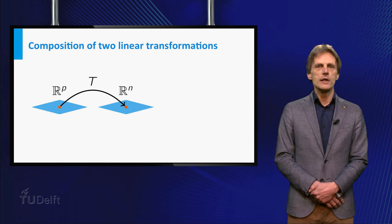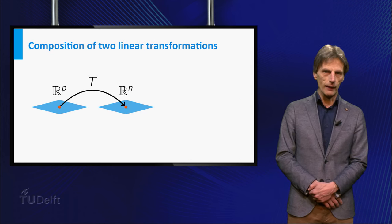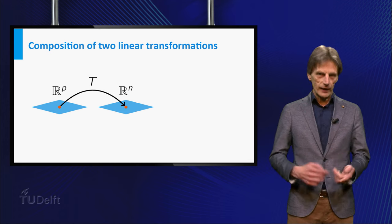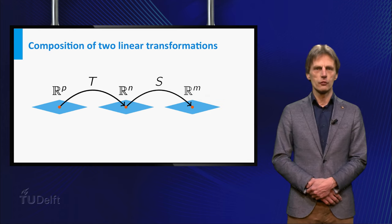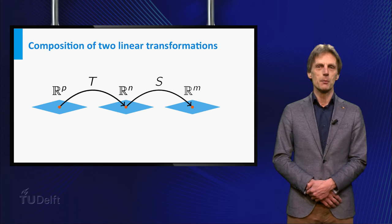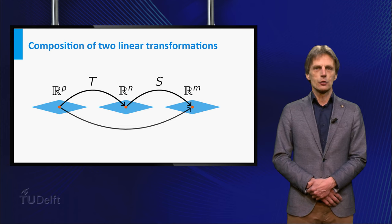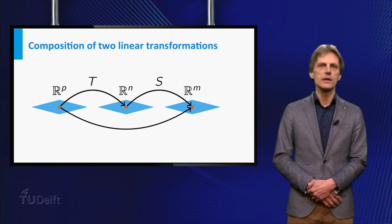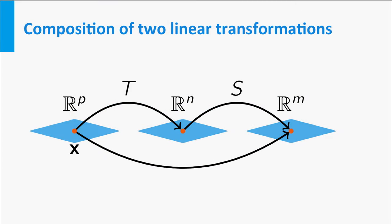Now suppose you have a linear transformation T from Rp to Rn and a second linear transformation S from Rn to Rm. Since the domain of S is equal to the co-domain of T, both equal to Rn, the composition of T and S is well defined in the following way: A vector x in Rp is mapped by T to a vector T of x in Rn, which in its turn is mapped to a vector S of T of x in Rm by the second linear transformation S.